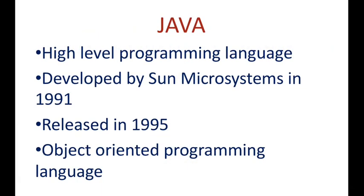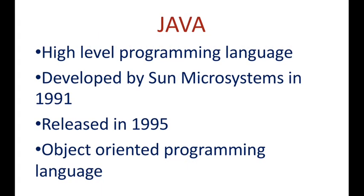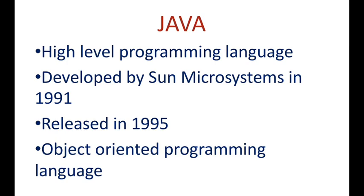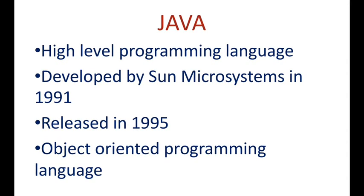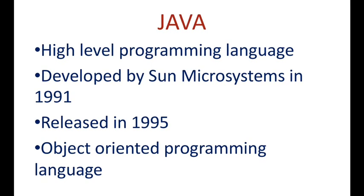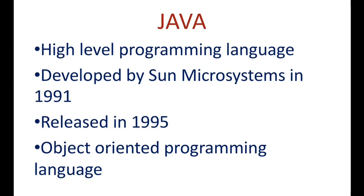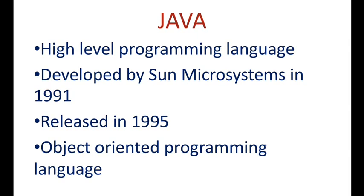Java is a high level programming language which was developed by Sun Microsystems in 1991 and released in 1995. Java is an object oriented programming language.